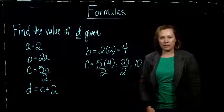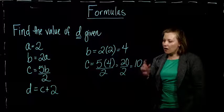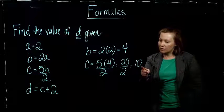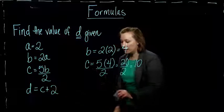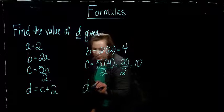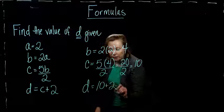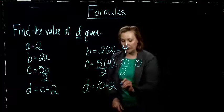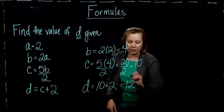So now I know what c is. c is 10. And now I can do the last step. I can use what I got for c and put it in for d, which is what we were trying to get. So d equals 10 plus 2, which is 12.